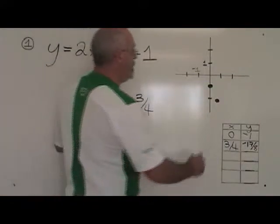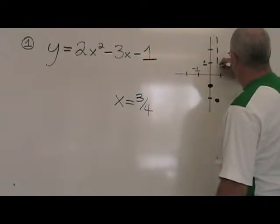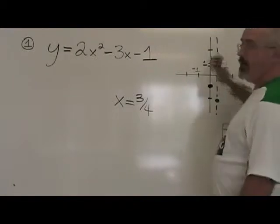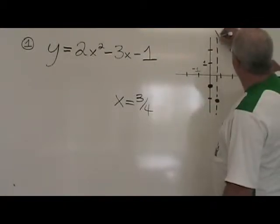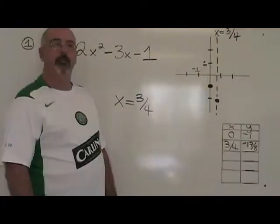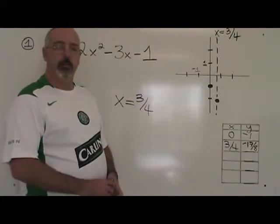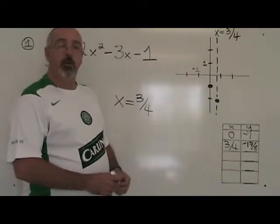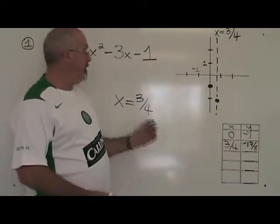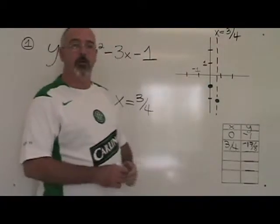I will draw it and label it x equals 3 quarters. The equation of the axis of symmetry has to be an equation — it has to have an equal sign. You can't just write 3 quarters. You have to write x equals 3 quarters on the graph to get the marks.